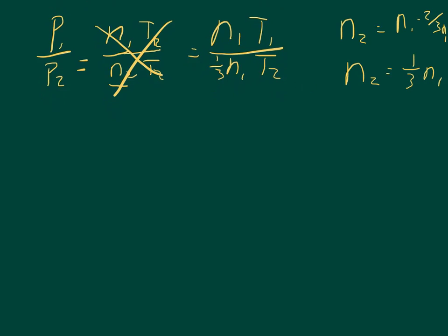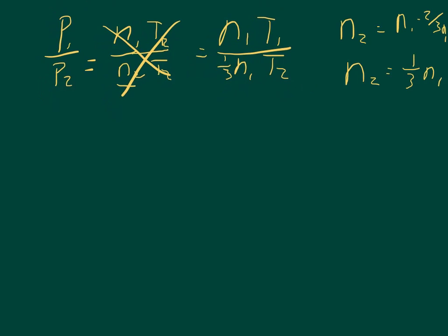So I'll just move all of this equation up. And you can see by looking at this, now I've got an N1 on the bottom and I've got an N1 on the top. And so I can cancel these out, and I can get that the initial pressure over the final pressure is equal to 1 times T1, the initial temperature, over one-third times T2.